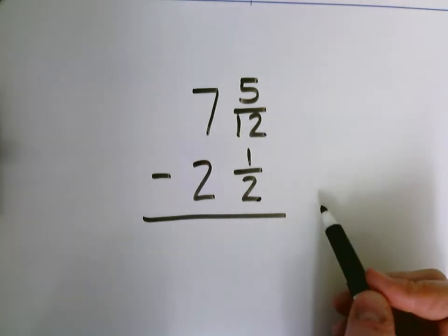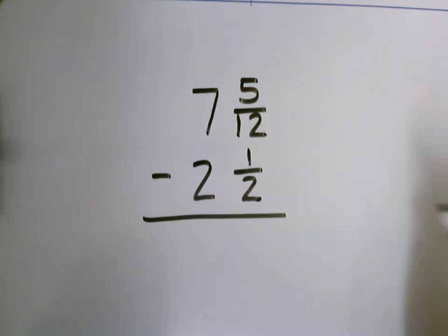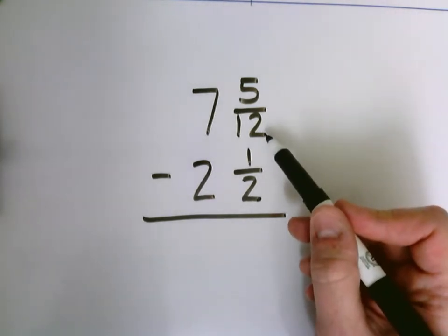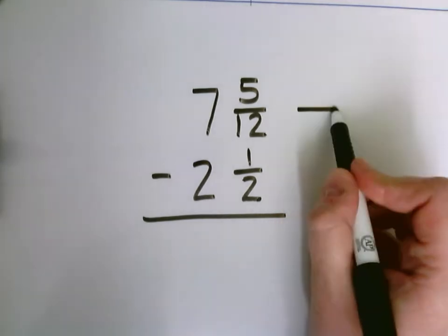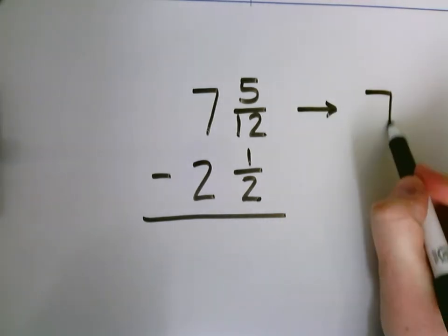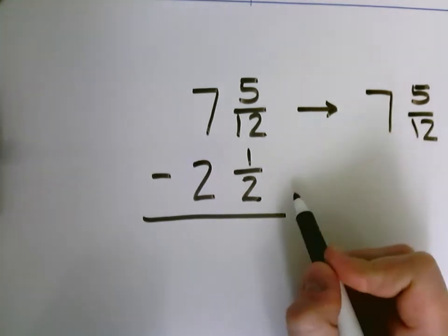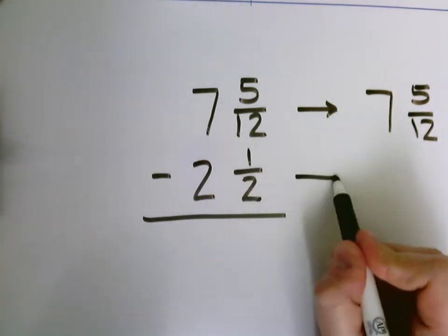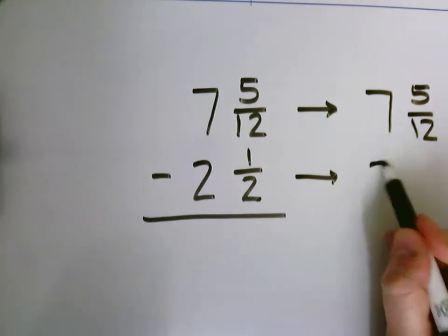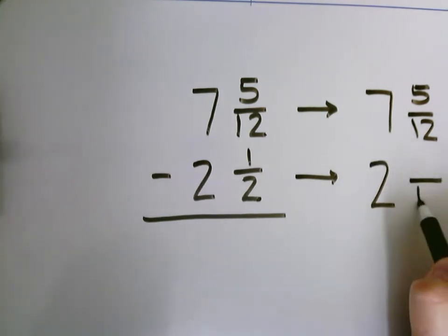So if I count by 2: 2, 4, 6, 8, 10, 12. 12 is a multiple of 2. So we're going to keep 12 as our denominator here, 7 and 5 twelfths.